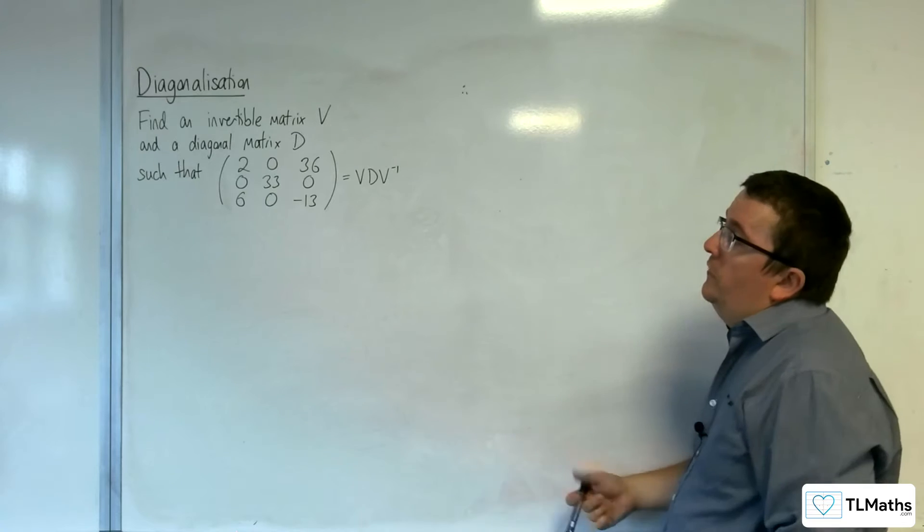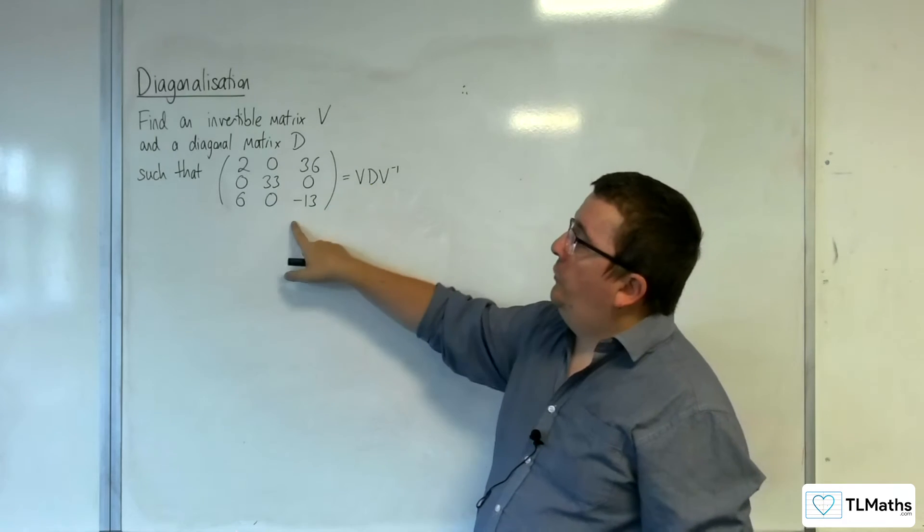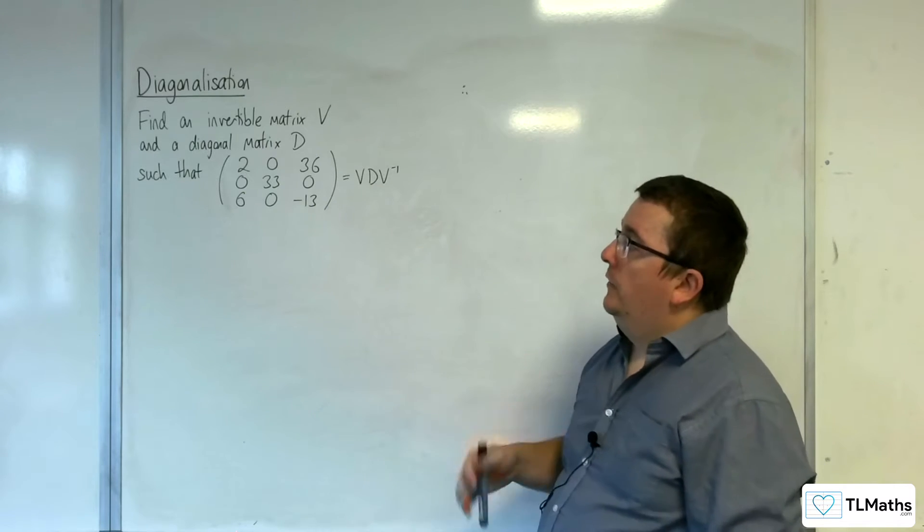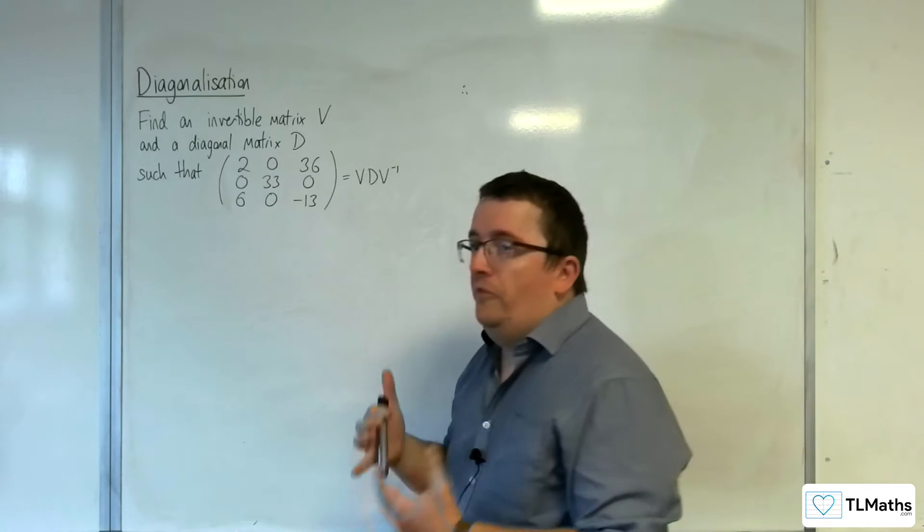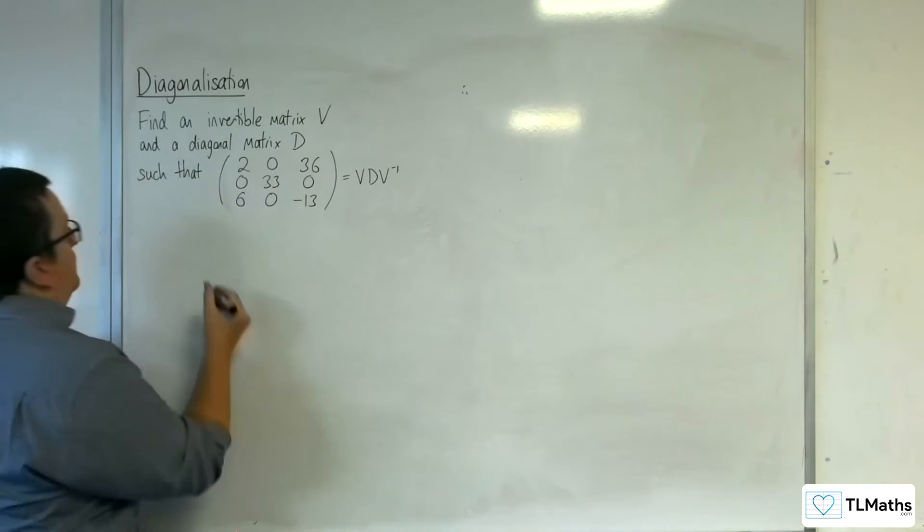In this video, we need to find an invertible matrix V and a diagonal matrix D, such that this 3 by 3 matrix is equal to V, D, V to the minus 1. So very similar to last time, we've got to find those eigenvalues and eigenvectors first.